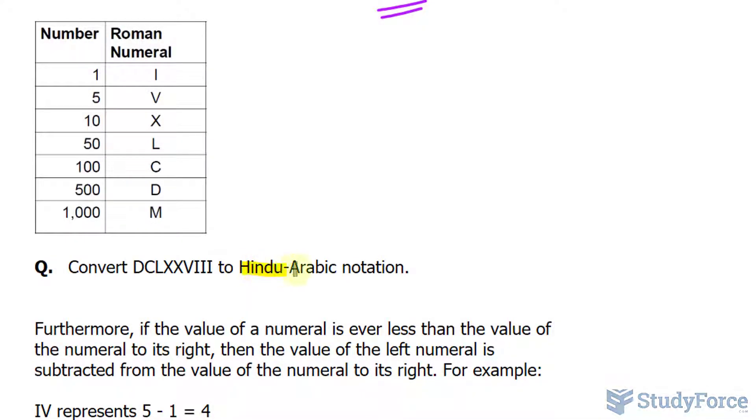That's the notation that we use today, where we use symbols between 0 and 9 to represent all the different numbers. So D represents 500. I'll start off by writing that out up here, we have 500. Then C is 100. L is 50. We have two Xs, which represent two 10s. V is 5. And those final three symbols represent 1.